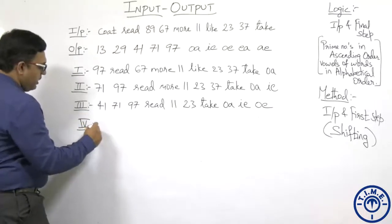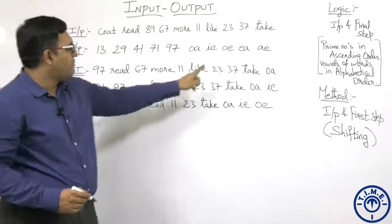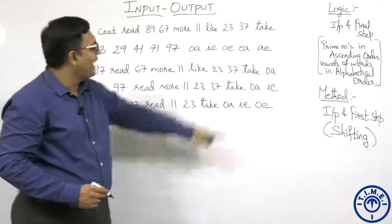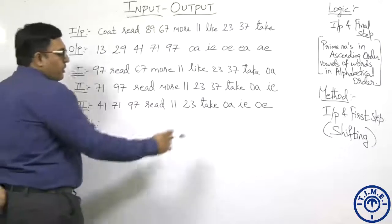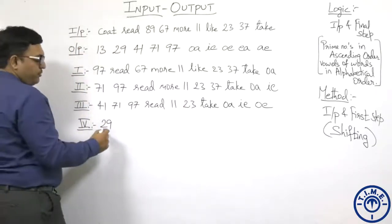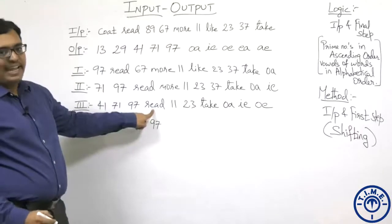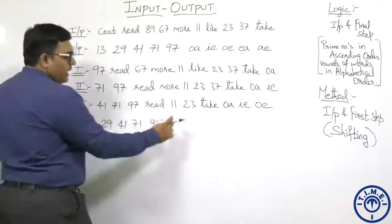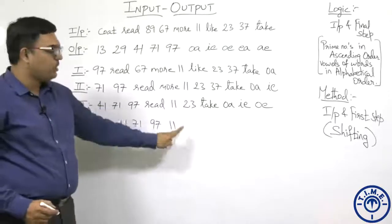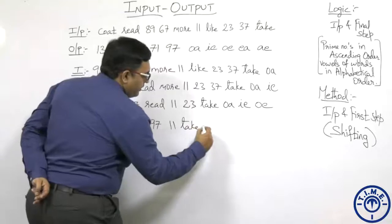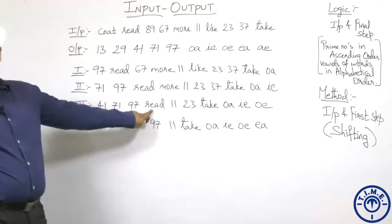In step 4, 29 comes before 41 — 29 comes from 23. EA comes from 'read', so 23 and read should not be repeated. Step 4: 29, 41, 71, 97 — read is ignored — 11, take, OA, IE, OE, EA. EA comes from the word read. 11 and 23 became 29, so 23 should not be repeated.